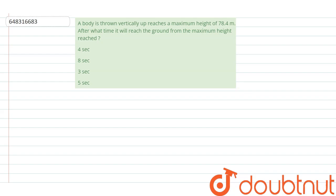Suppose this is the body and we throw it vertically upwards. It reaches maximum height at this point, and this distance equals 78.4 meters, which is equal to h. Here the initial velocity is u, and at the maximum height the velocity is v.